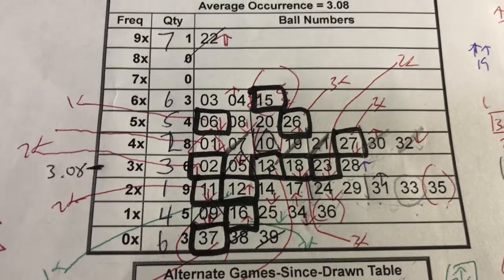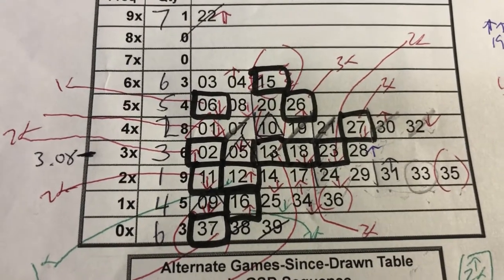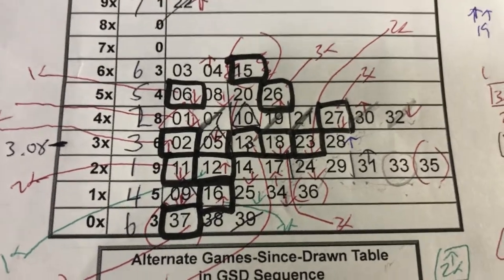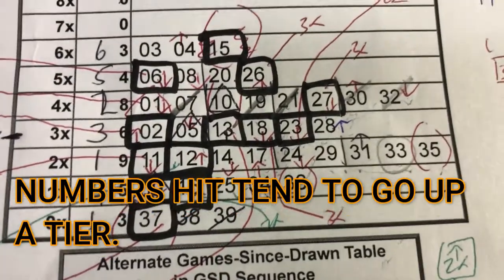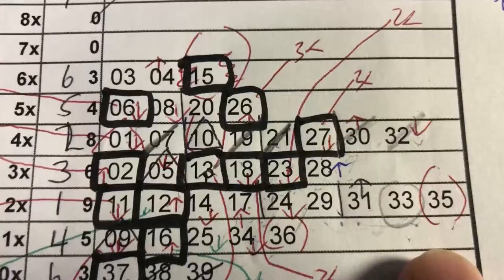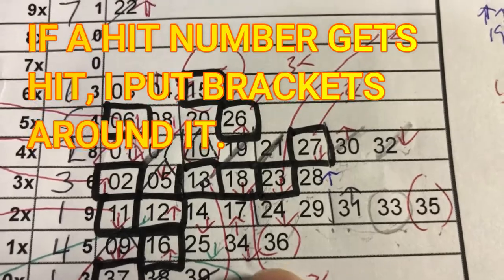So anyway, I'm going to talk about numbers with parentheses, brackets. Whenever a number is hit and it stays in the same tier, I put brackets, parentheses around them.